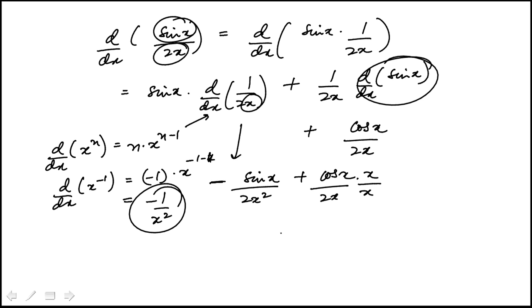And multiply by x over x, our new denominator is 2x squared, and that would be x cosine x minus sine x. So I'm just writing the positive term first.